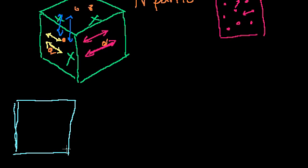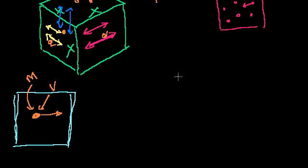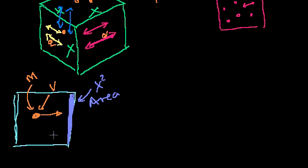Let's take a sideways view and study one particle. Let's say I have one particle with some mass m and some velocity v. This is one of the capital N particles in my system. What I'm curious about is how much pressure does this particle exert on this wall? We know the area of this wall is x times x, so it's x squared.